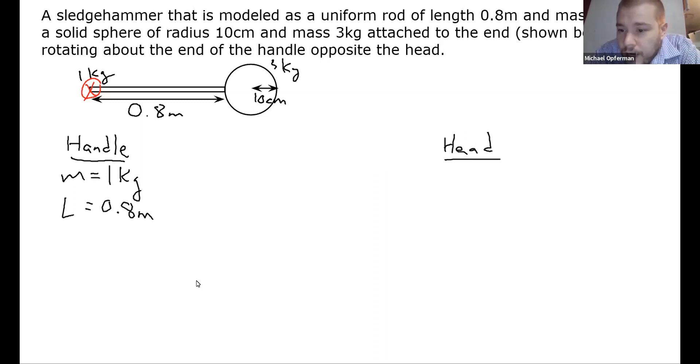So what you should actually do here is say ICM is one twelfth ML squared for a uniform rod. And then you would do IP equals one twelfth ML squared plus M times, we move the axis of rotation by one half L. I'm rushing through this a little bit because this is the exact same problem we did in previous video, and we end up with a final result that the moment of inertia is one-third ML squared.